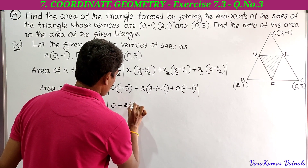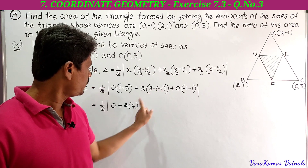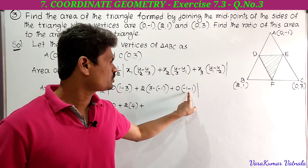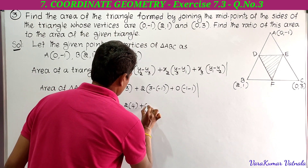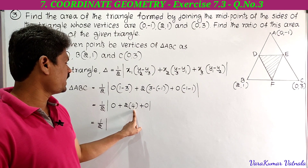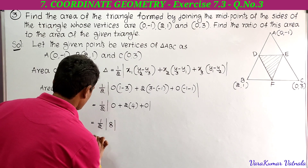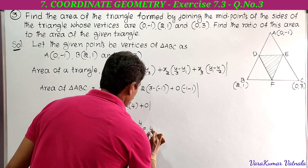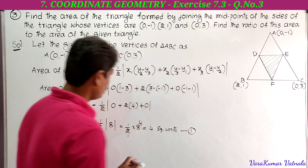Simplifying: half times the modulus of 0 plus 8 plus 0 = half times 8 = 4. So the area of triangle ABC is 4 square units. This is equation number 1.